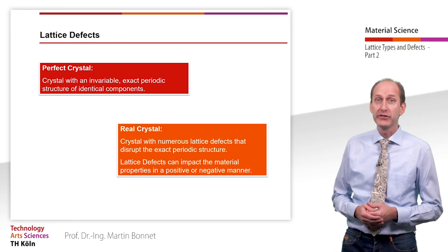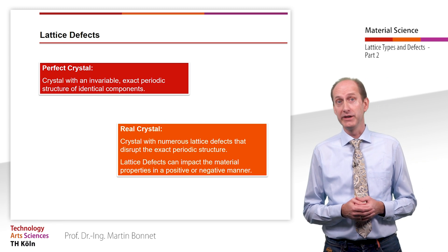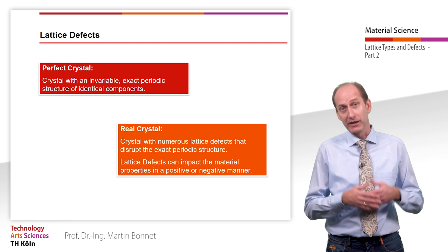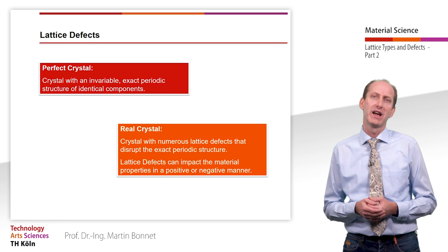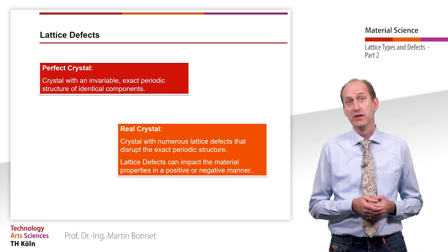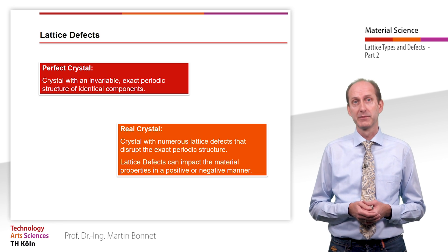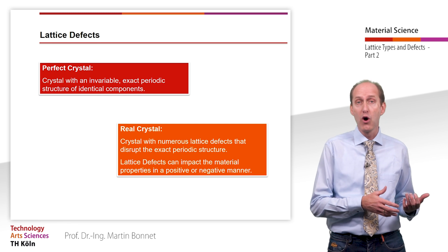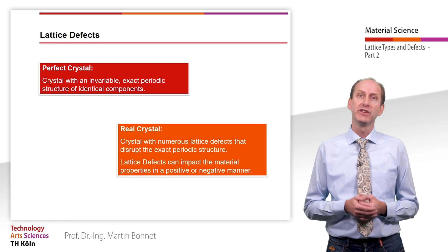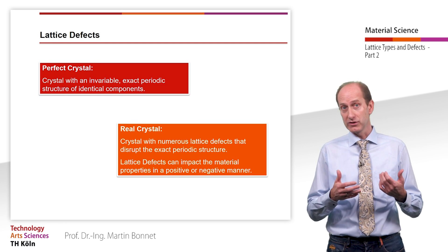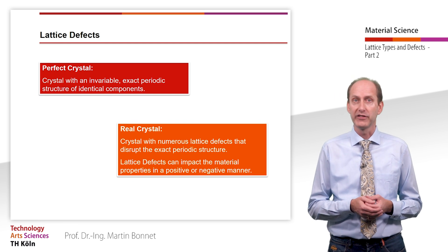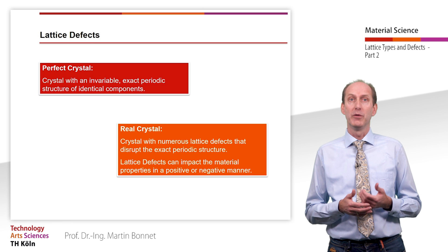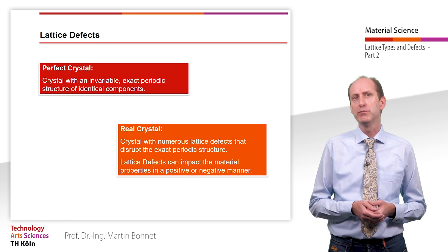All these crystal lattices are perfect crystals with an invariably exact periodic structure of identical components. In contrast, real crystals are characterized by numerous lattice defects that disrupt the exact periodic structure. Lattice defects can impact material properties in a positive or negative manner. Since most of these defects are intentionally or unintentionally included during the processing of materials, knowledge about their impact on material properties is of great importance to the engineer.